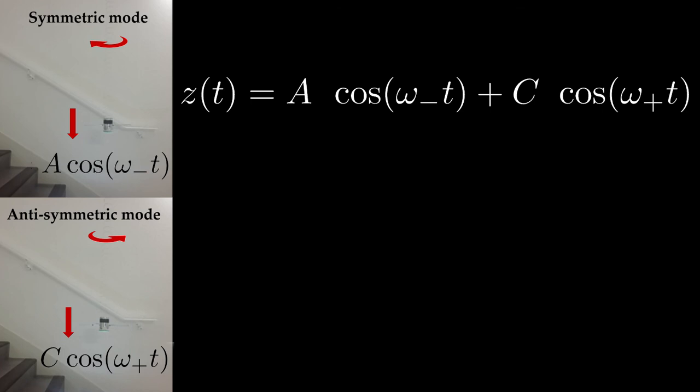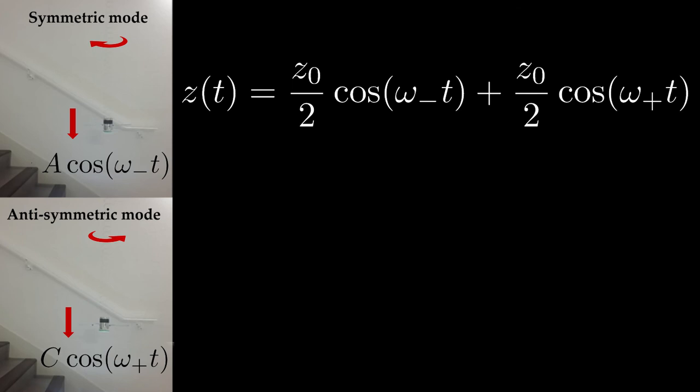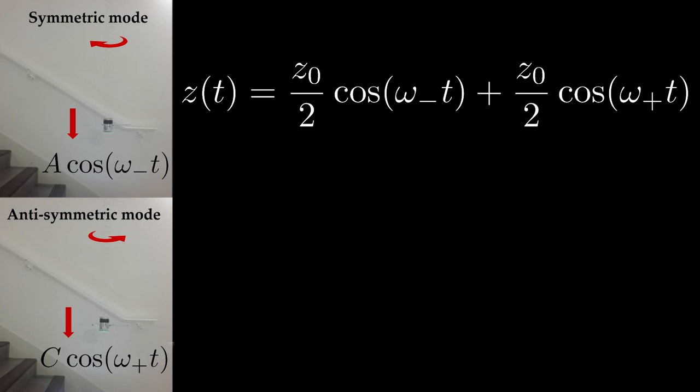These two modes are the normal modes of our system. From a mathematical point of view, they are the most simple modes the pendulum can have. All the other modes are linear combinations, overlays of those two particular modes. The Wilberforce phenomenon is actually a never-ending battle between those two oscillation modes.